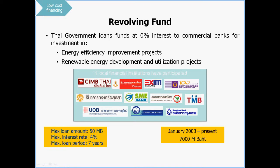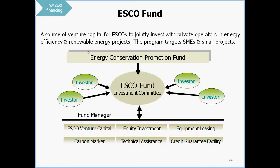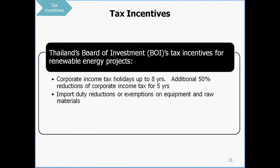In addition to the low-interest loan fund, there was an ESCO fund which provided equity investment and equipment leasing. Thailand also provided tax incentives for renewable energy, including reductions of import duties on renewable energy equipment, a corporate income tax holiday of up to 8 years, and an additional corporate income tax reduction of up to 50% for an additional 5 years.